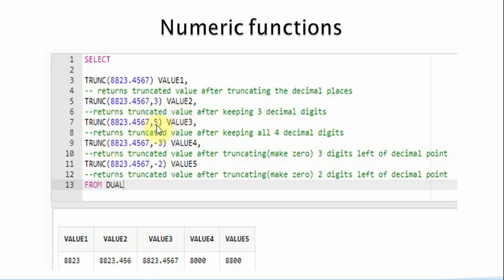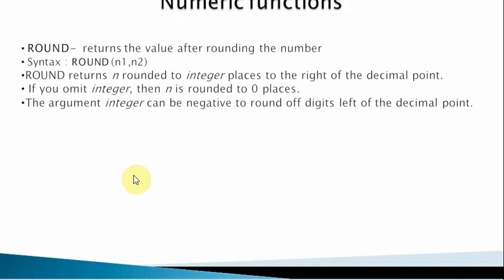If I give n2 as 5, since there are only four decimal places, the original number is returned as-is. Now if I use a negative number, it adds zeros to the left of the decimal point. With minus 3, it zeroes out three digits to the left, returning 8000. With minus 2, it adds two zeros to the left and returns 8800.